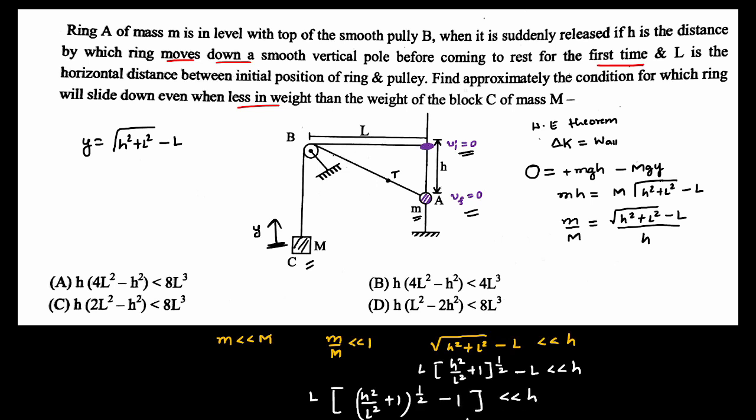Now usually we'll do binomial approximation like one plus x whole power n equals one plus nx when x is much much smaller than one, this we know. But if we use that here, you'll see that our terms will vanish. So here I'll show you quickly that...